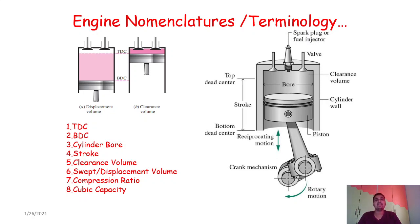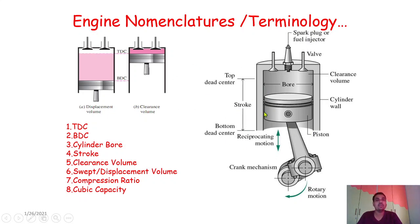In this lecture we are going to learn engine nomenclature or its terminology. In the last lecture we covered different construction details of the engine along with its components — walls mechanism, piston, cylinder, cylinder head, crankshaft, crank pin, etc. On screen we have a cut-section model of a single cylinder engine. Without understanding all these nomenclatures we will never get thorough knowledge of the engine.